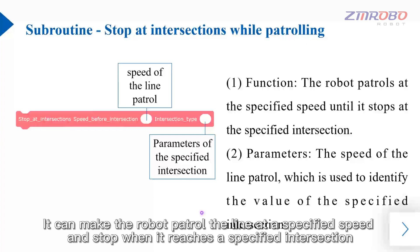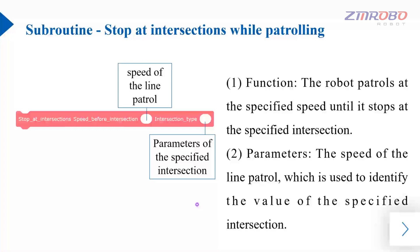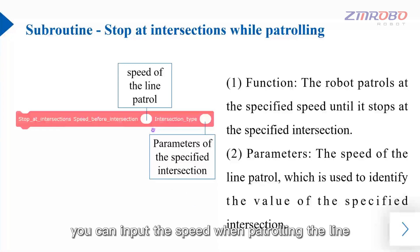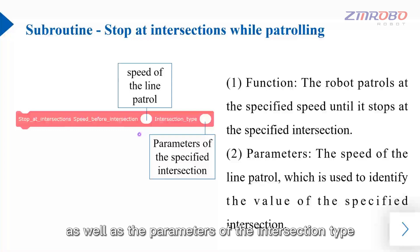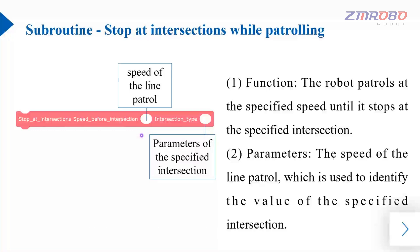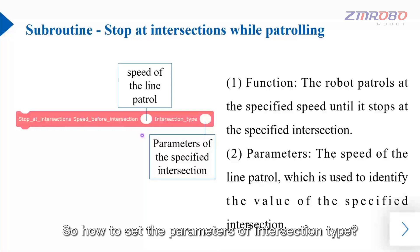Next let's learn the subroutine of stop at intersection when patrolling. It can make the robot patrol the line at a specified speed and stop when it reaches a specified intersection. In its call module you can input the speed when patrolling the line as well as the parameters of the intersection type. How do you set the parameters of intersection type?